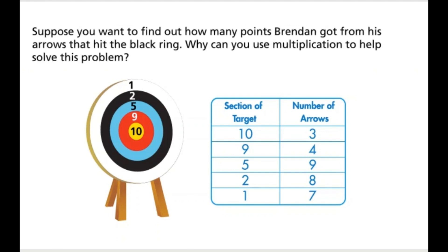Suppose you want to find out how many points Brendan got from his arrows that hit the black ring. Why can you use multiplication to help solve this problem?